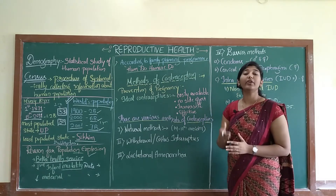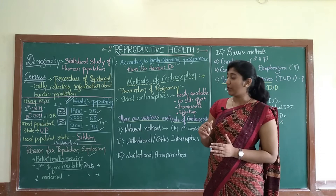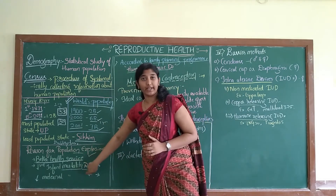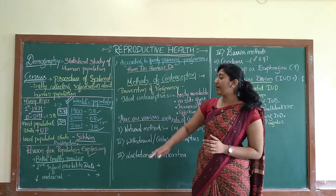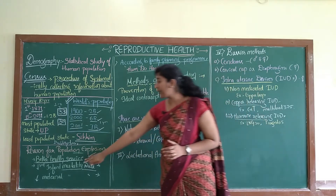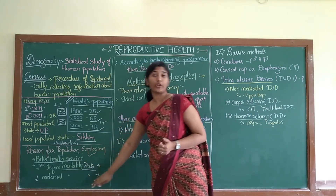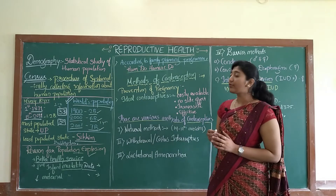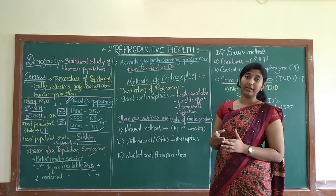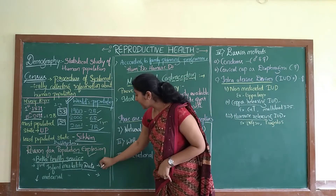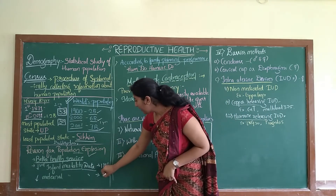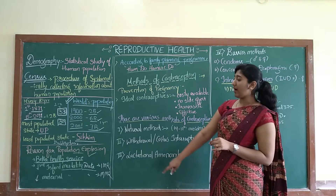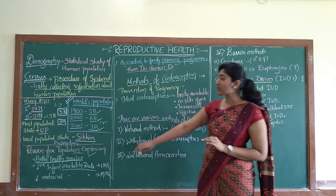Infant mortality rate refers to the death rate of babies during or after delivery. In ancient periods, infants used to die frequently during parturition. There has been a large decrease in the infant mortality rate (IMR). Additionally, the maternal mortality rate (MMR) — the death rate of pregnant ladies giving birth — has also reduced. Both IMR and MMR are reduced due to advancements in the medical field, which is a reason for population explosion.